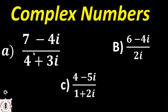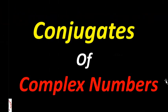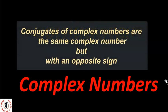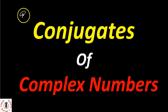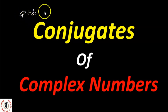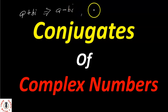The first thing I want us to look at is conjugates of complex numbers. Conjugates of complex numbers are actually the same complex numbers but with an opposite sign. For example, if I have a + bi, which is a complex number, the conjugate of a + bi will be a - bi.